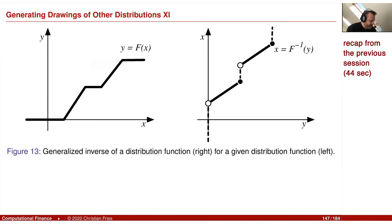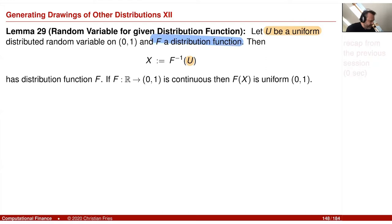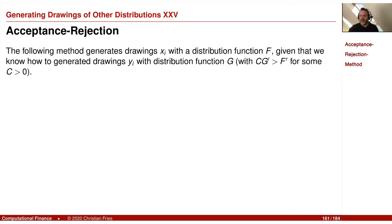Whenever you have some area of non-uniqueness, we take just the infimum of this set, and we could then prove this lemma: if you have the generalized inverse of the distribution function, then from a uniform random variable — from a sequence of uniform drawings — you can generate an f-distributed random variable x by applying the inverse. So now, what do we do if we do not have the inverse of the distribution function, either because we do not know a closed formula or we do not have a nice approximation like the one we had for the normal distribution?